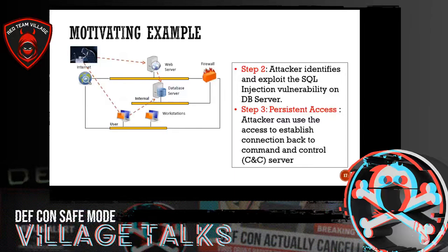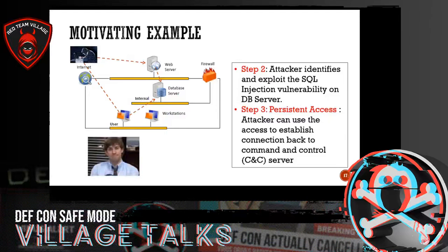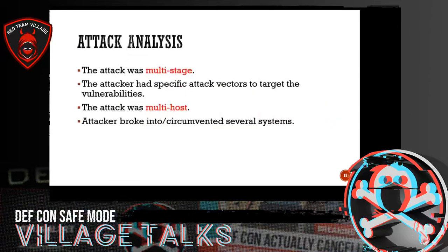There are two attack paths in this small network to achieve the same goal. Imagine a giant network with tens of thousands of instances where you are asked to perform a penetration test in a limited period of time — you need some autonomy or automation to achieve good coverage. The attack is multi-stage, the attacker had specific attack vectors for each vulnerability, went through multiple hosts, and circumvented defenses present on the systems to achieve his goal of data exfiltration.